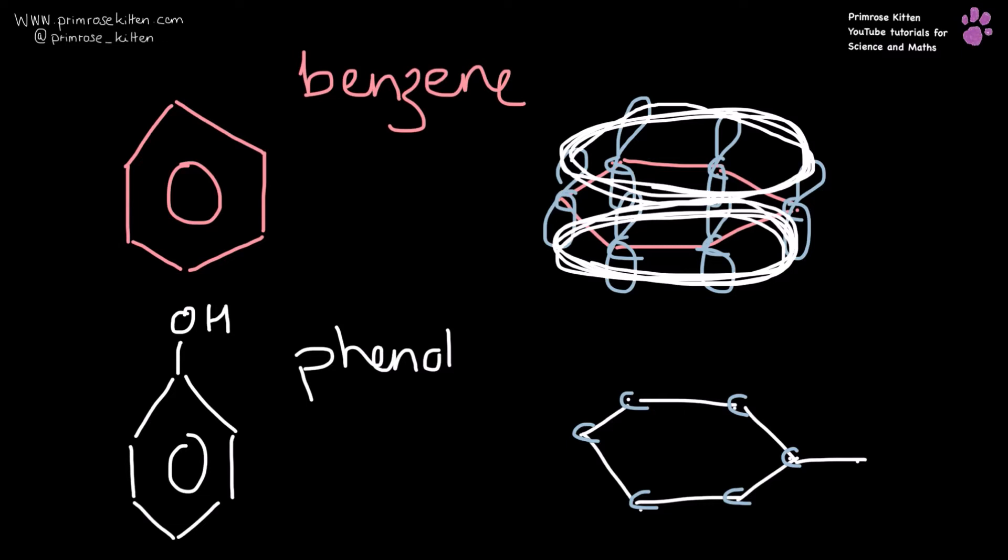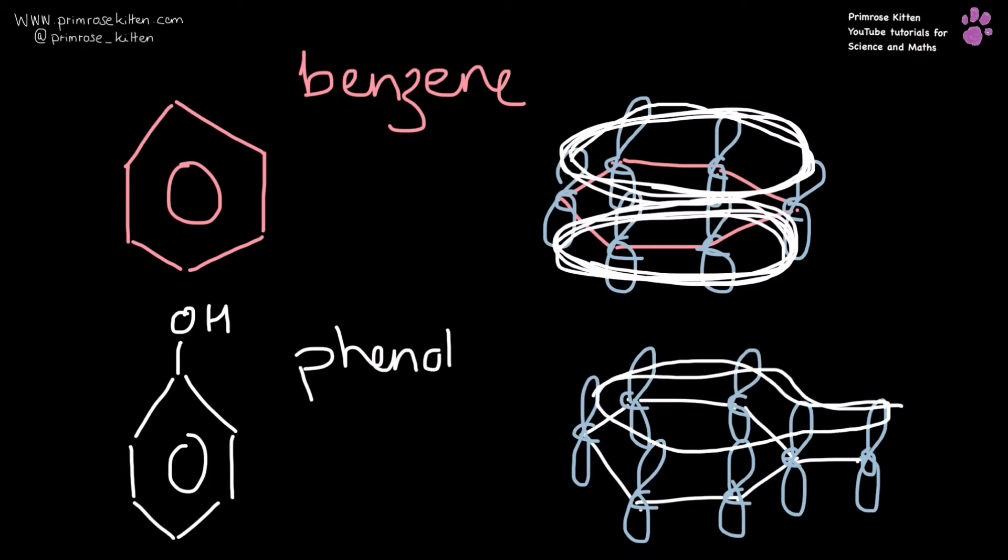Now when we're talking about phenol, what we have are the six p orbitals from carbon and then a p orbital from oxygen as well, and this gets involved with the delocalization. So we can see that our ring of delocalization for phenol, top and bottom, is actually much larger than it is for benzene.